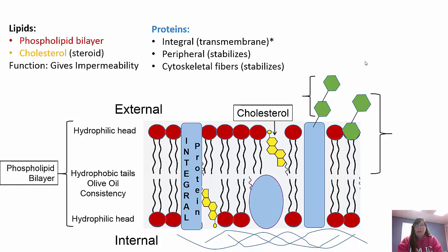It's a phospholipid bilayer, so the bilayer itself is made up of phospholipids. You have the hydrophilic or polar heads and the hydrophobic or nonpolar tails, and it gives it kind of that olive oil consistency. It's going to be a barrier between the inside and the outside of the cell, and we have molecules called cholesterol embedded throughout the plasma membrane - those are the little yellow things in the picture.